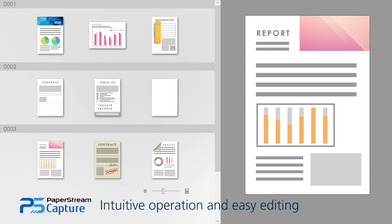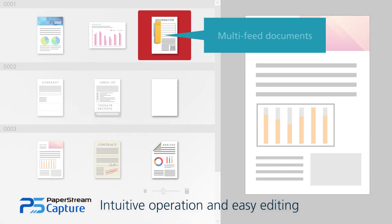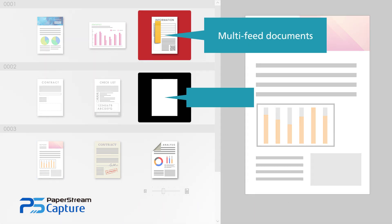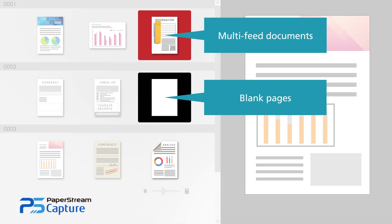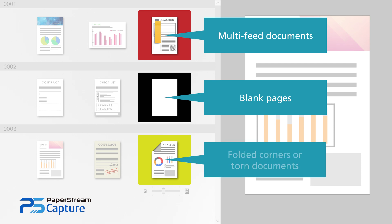Misfeeds and scanning quality errors can be seen right away, as errors are displayed in color frames for fast and easy quality assurance.